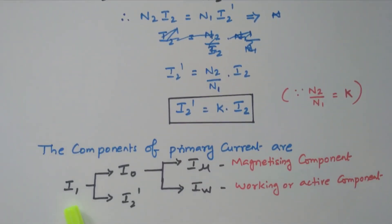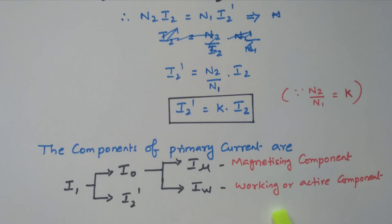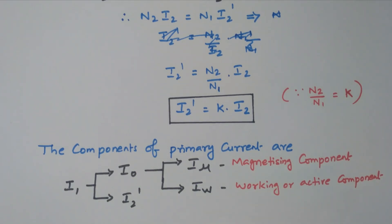The total primary current I1 is the vector sum of I0 and I2'. Under no-load condition we have I0; under loaded condition we have I2'. So I1 is the vector sum of I0 and I2'. The no-load current I0 itself has two components: one is the magnetizing component Iμ, and the other is the working component IW, also called the iron loss component, which accounts for core losses. In this video we discussed what happens to the current and flux when the transformer is loaded.